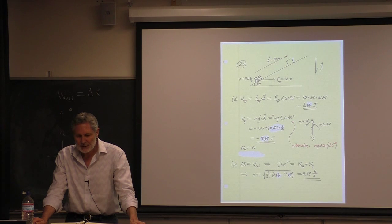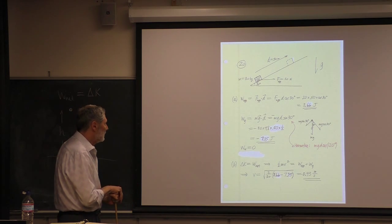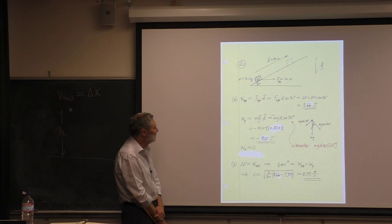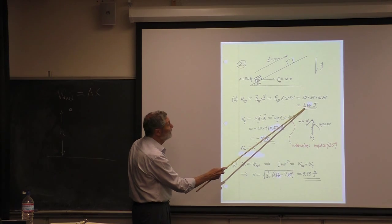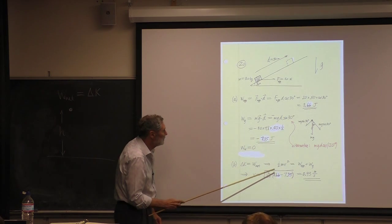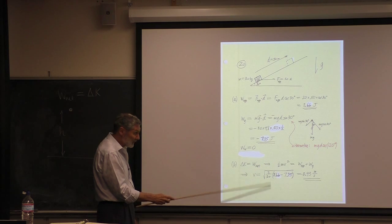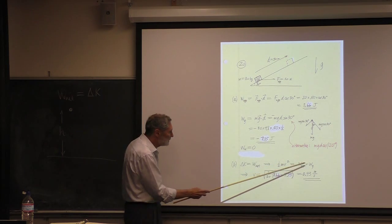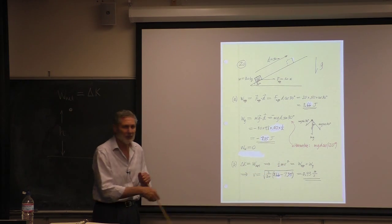Since the book starts from rest, it has no initial kinetic energy. Using the work-kinetic energy theorem: the change in kinetic energy equals the work done by the net force, which is the sum of the individual works. Since this is positive, the object gains kinetic energy. We solve for v — one equation, one unknown — and get about 1 meter per second.